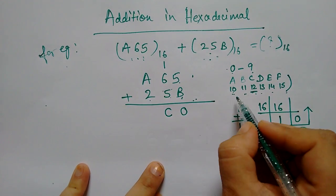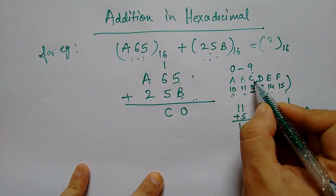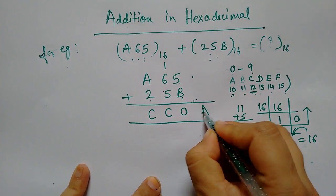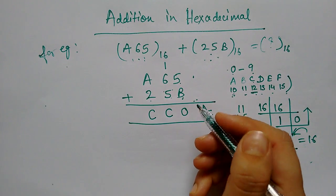Now, A plus 2. What is 10? 10 plus 2 is 12. Now, 12. What can we write? C. So, C is your final answer. This is your final answer. You can add hexadecimal.